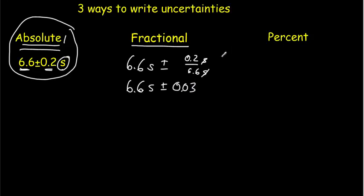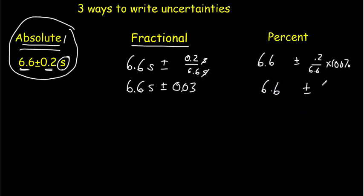We tend to be a bit more familiar with writing things in terms of percent instead of fractions. So rather than writing 0.03, we'd write 3%. If we wanted to write our values in percent form, we'd write 6.6 plus or minus 0.2 out of 6.6 times 100%. So we'd end up writing that as 6.6 plus or minus 3%. Don't forget to put the units in with the value.